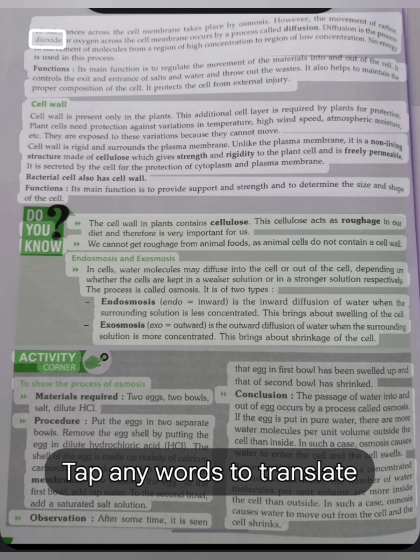Substances not needed by the cells are allowed to go out. The movement of substances across the cell membrane takes place by osmosis. However, the movement of carbon dioxide or oxygen across the cell membrane occurs by a process called diffusion. Diffusion is the process of movement of molecules from a region of high concentration to region of low concentration. No energy is used in this process. Function: Its main function is to regulate water and throw out the wastes. It also helps to maintain the proper composition of the cell. It protects the cell from external injury.